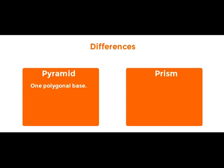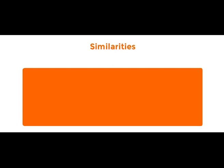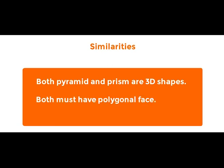Pyramid has one polygonal base; prism has two polygonal bases. Pyramid has triangular faces; prism has rectangular faces. These are the very important differences between pyramid and prism. Now the similarities: both pyramid and prism are 3D shapes, and both must have polygonal faces — they cannot have curved or circular faces.